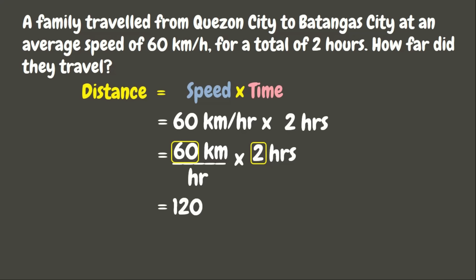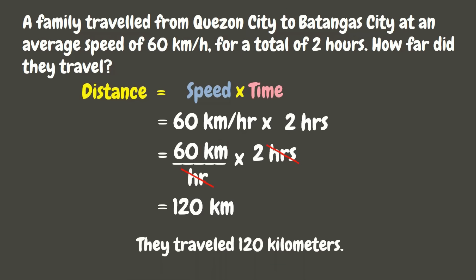Now, what could be our unit of measurement? Here, we can already cancel the units of time, which is hr, since hr divided by hr is 1. So, we can simply cancel this out, and that leaves us the unit kilometers. Therefore, they traveled 120 kilometers.